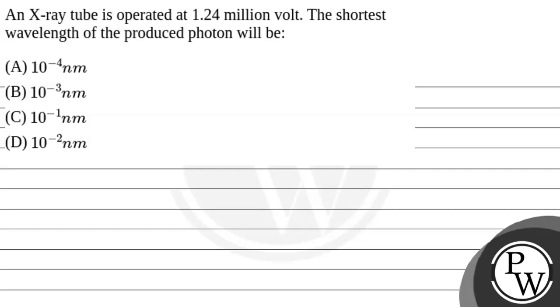Hello, let's see the question. The question says that an X-ray tube is operated at 1.24 million volt. The shortest wavelength of the produced photon will be?